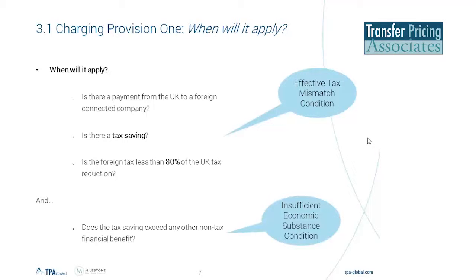There's one more chance to escape the DPT: if the insufficient economic substance condition is not met. This is the misleading part of this provision because it doesn't require the taxpayer to evidence economic substance through looking at functions, assets, and risks in the recipient territories. Instead, it requires the taxpayer to quantify a non-tax financial benefit — looking at the financial benefits of, say, a centralized model, discounting any tax benefits that arise. All of these — your payment to the next party, your tax saving, your 80% test, and your insufficient economic substance condition — sit within what's called the effective tax mismatch condition. So when you're looking at the legislation, that's where you're headed.